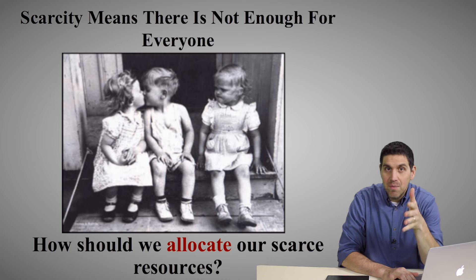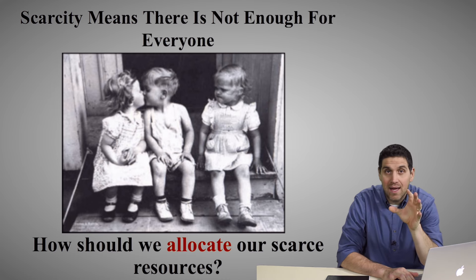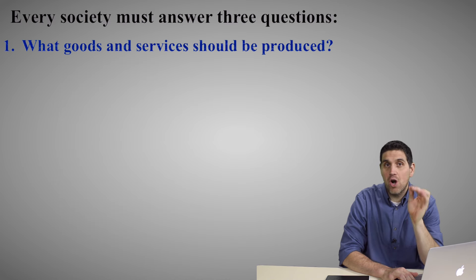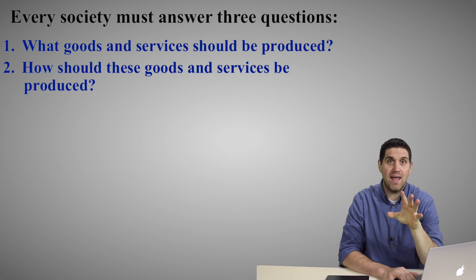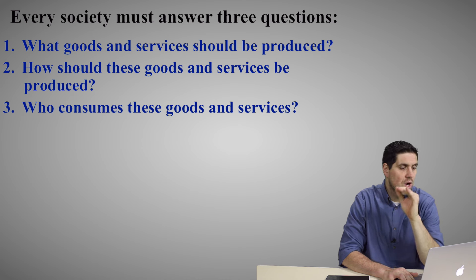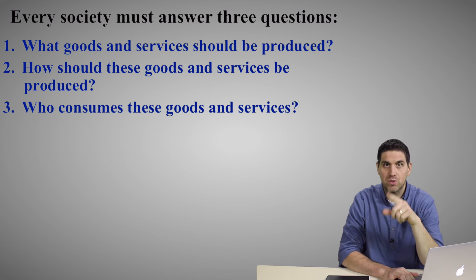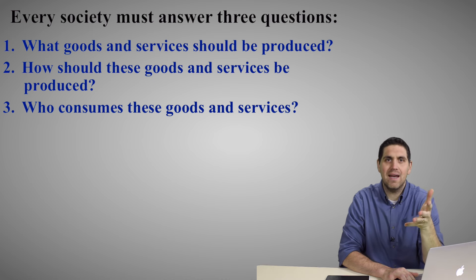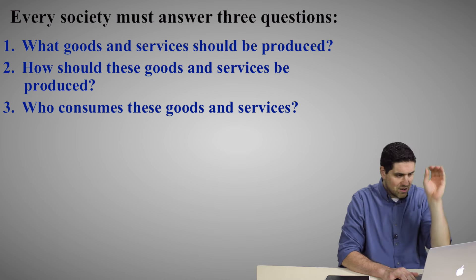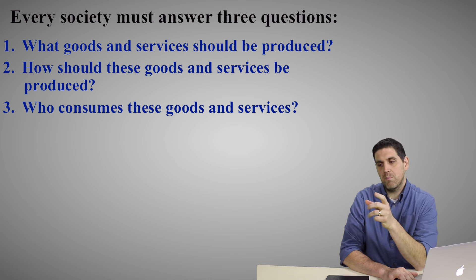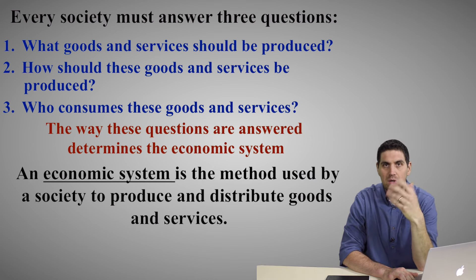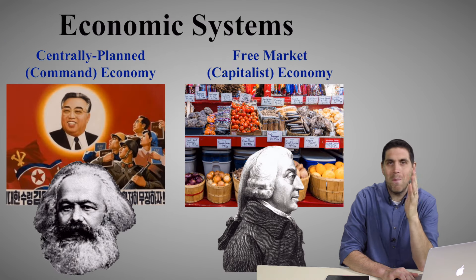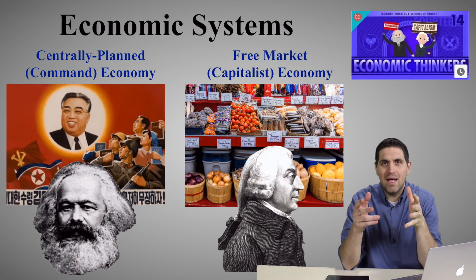Scarcity means there's not enough for everyone, so we have to figure out the best way to allocate our scarce resources. How we do that determines something called our economic system. There are three main economic questions every society has to answer: what goods and services should be produced, how should they be produced, and who consumes those goods and services. The way these questions are answered determines your economic system — it's the method society uses to produce and distribute goods and services.